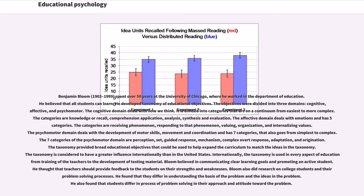The psychomotor domain deals with development of motor skills, movement, and coordination across seven categories from simplest to complex: perception, set, guided response, mechanism, complex overt response, adaptation, and origination. The taxonomy provided broad educational objectives that could help expand the curriculum. It is considered to have greater influence internationally than in the United States, where it is used in every aspect of education from teacher training to development of testing material.